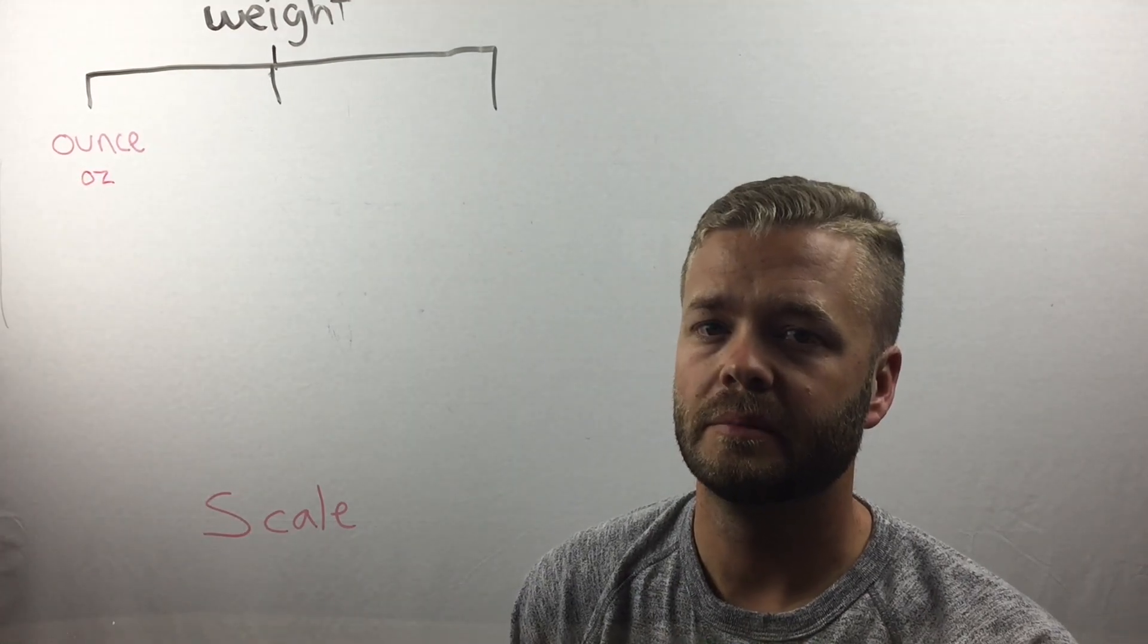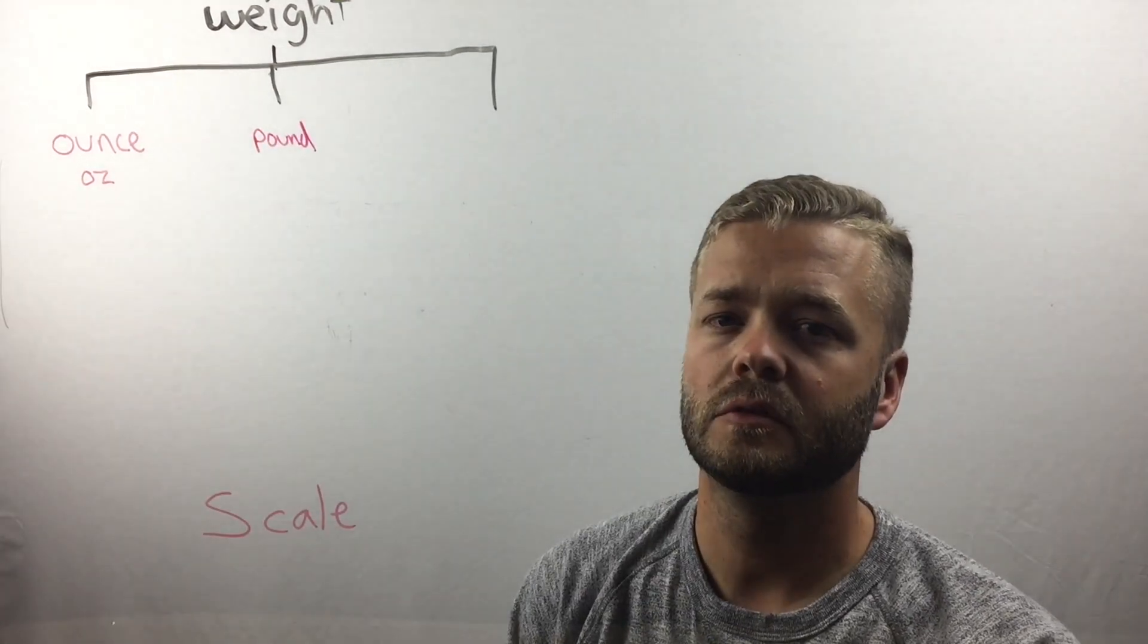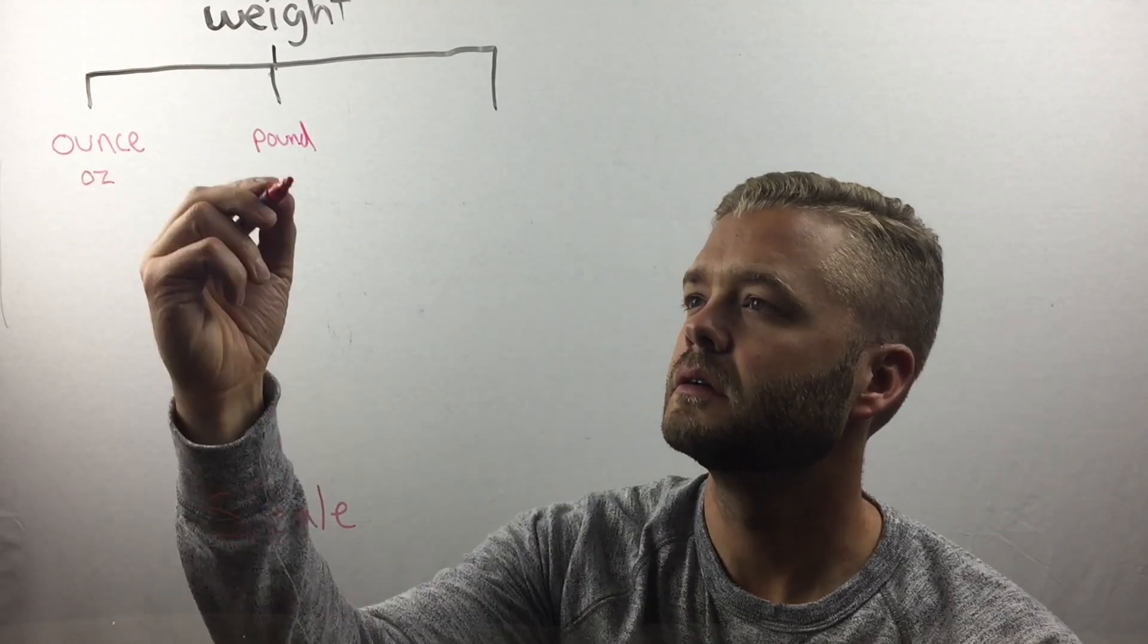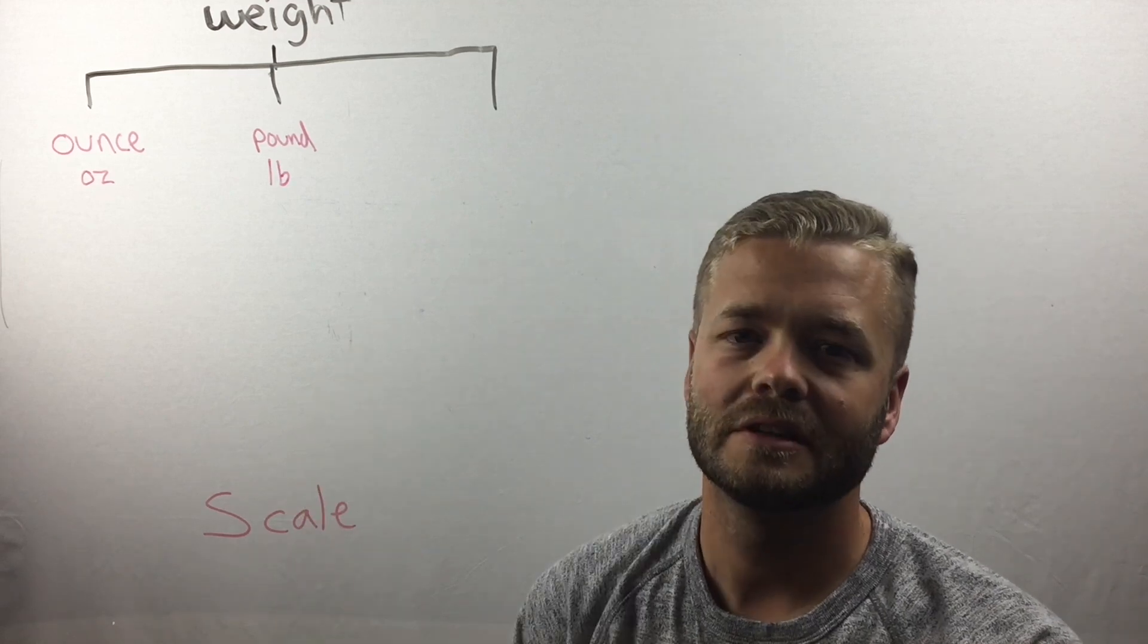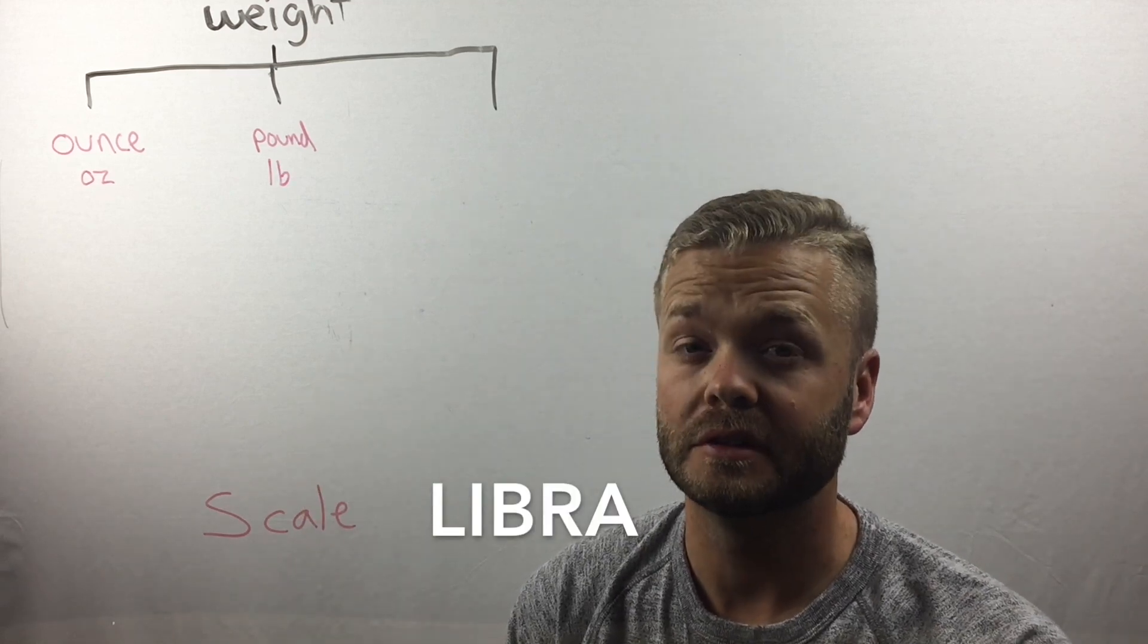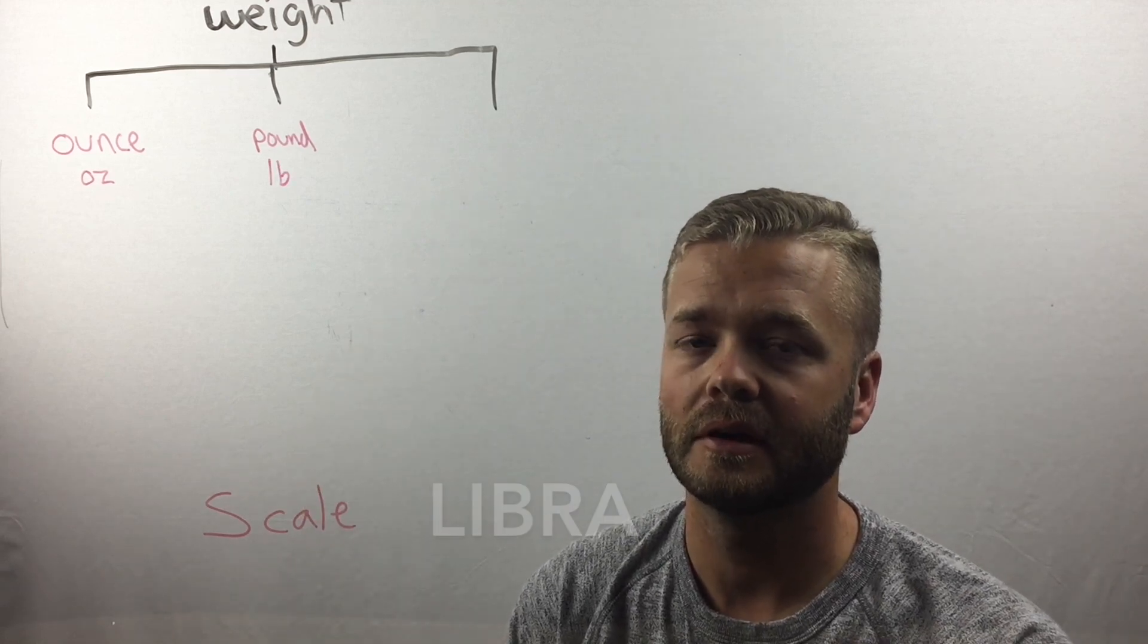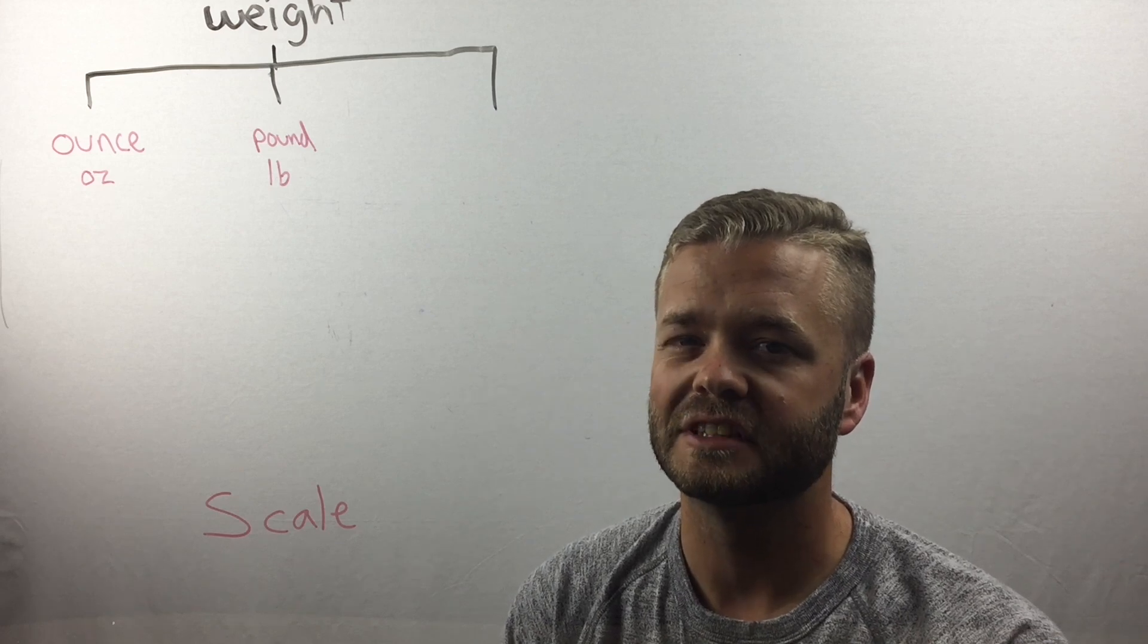The next one is the pound. The symbol for pound is LB. Now why would they use LB for a pound? That's because the LB stands for Libra. If you speak Spanish, you know that a Libra is a pound. A Libra is also Latin for a scale.